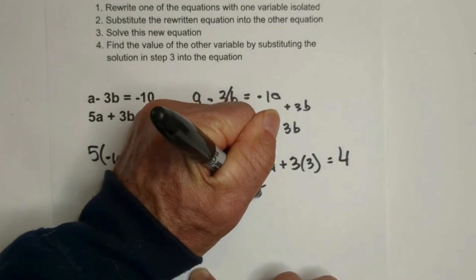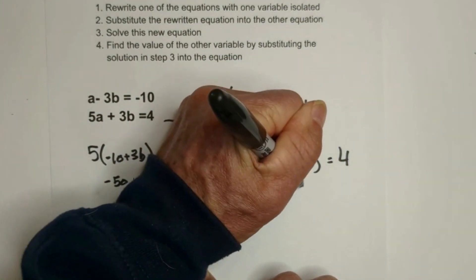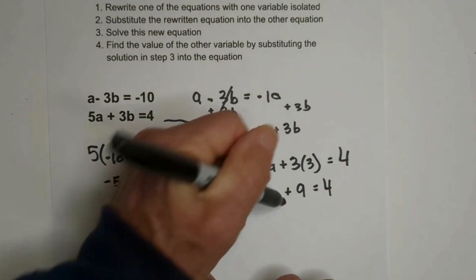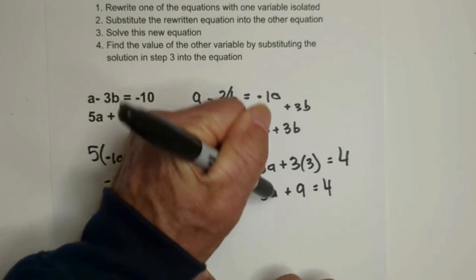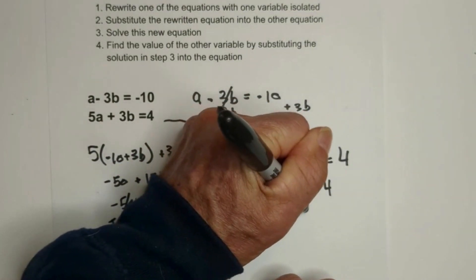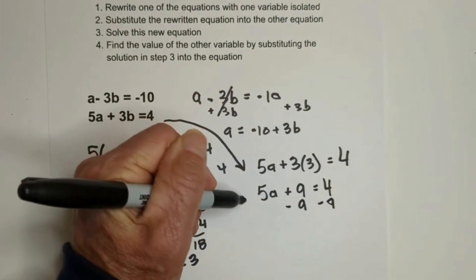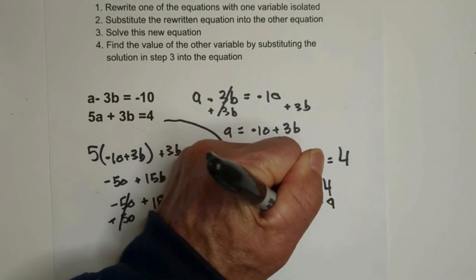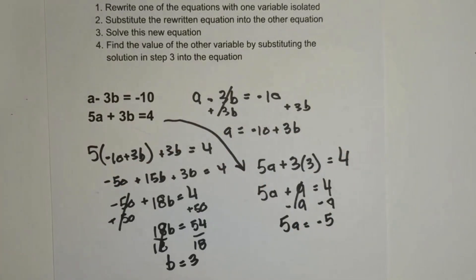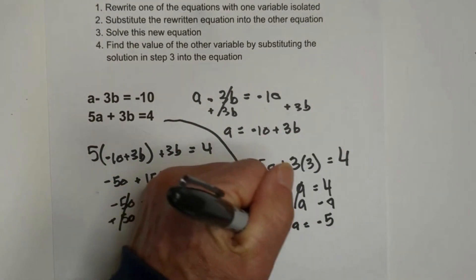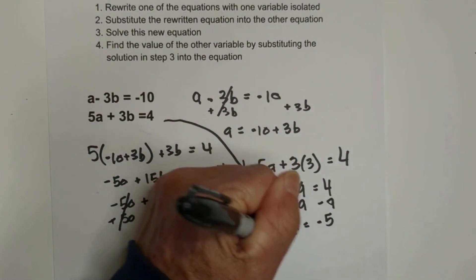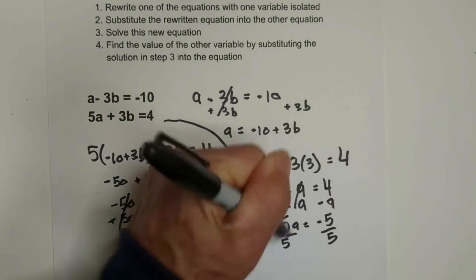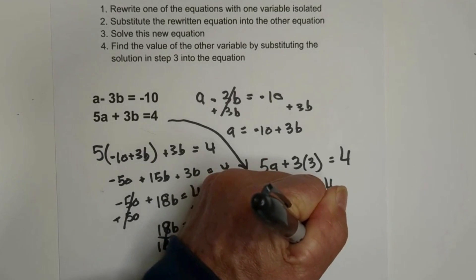So now let's solve this. I have 5A plus 9 equals 4. Let's get the A by itself. So I'm going to subtract 9 from both sides. So these cancel. Bring down the 5A equals negative 5. And now let's solve for A, get A isolated by an inverse operation of division. So equals negative 1.